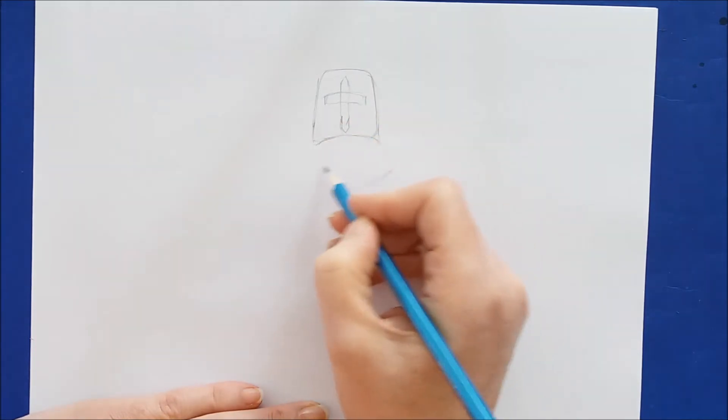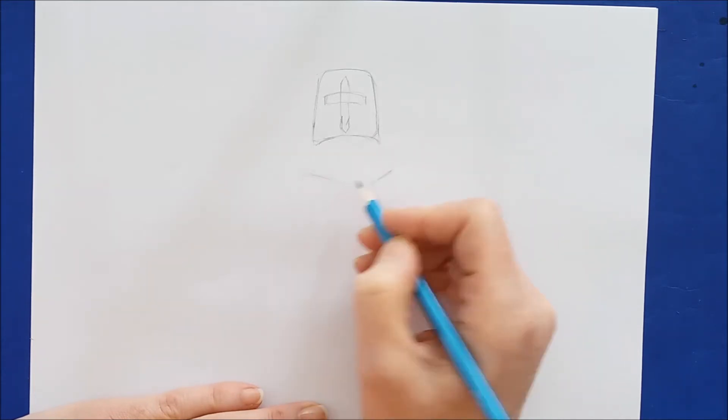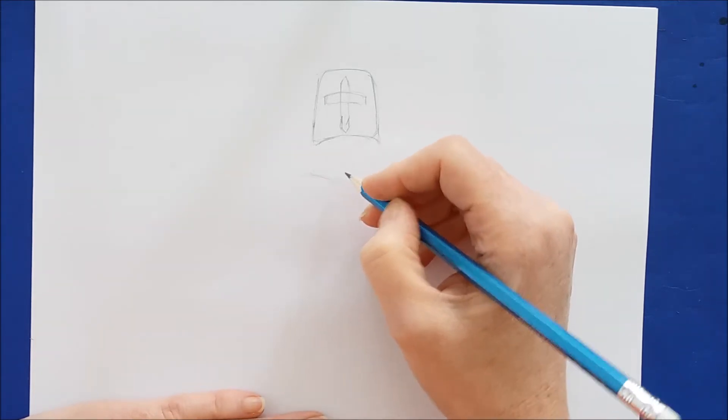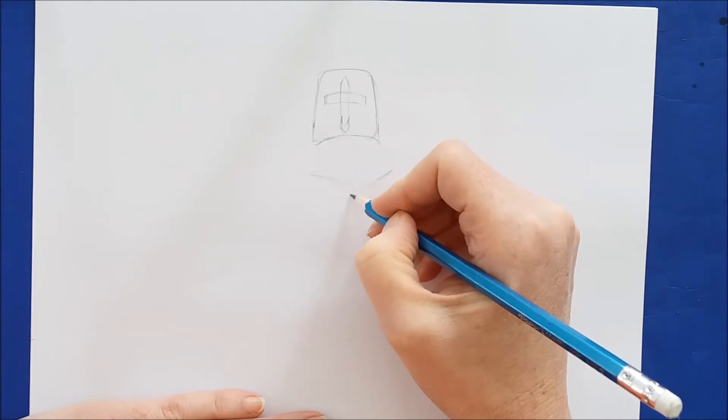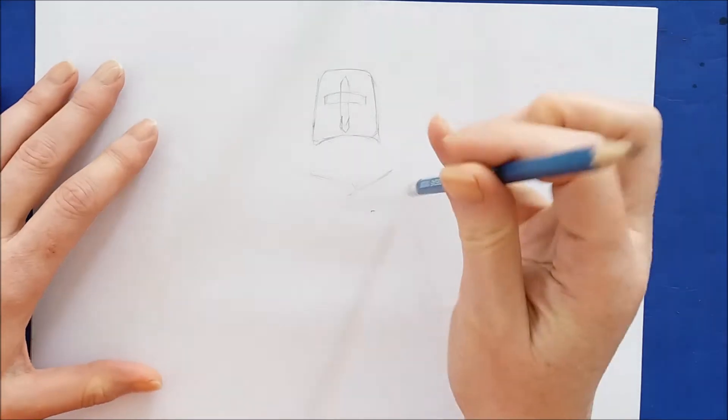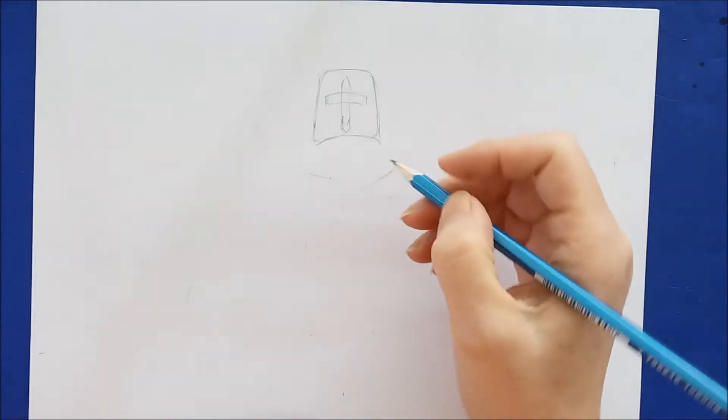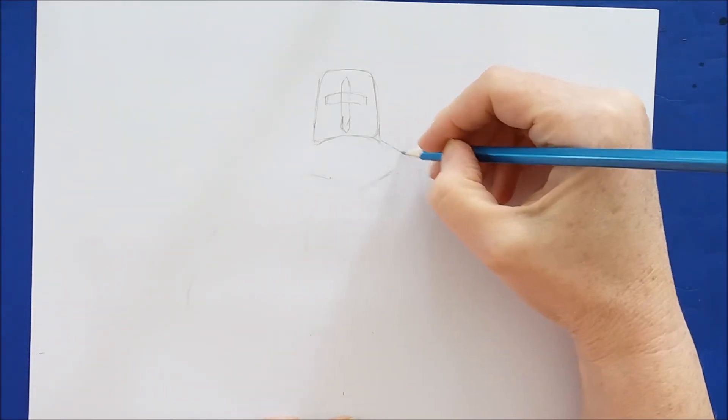Right here I'm just drawing the first arm as a light line and the second arm here. These arms are going to be holding the sword that's in front of the knight. I'm just drawing it lightly because I'll go over it here in a few minutes once I get the proportions the right way.